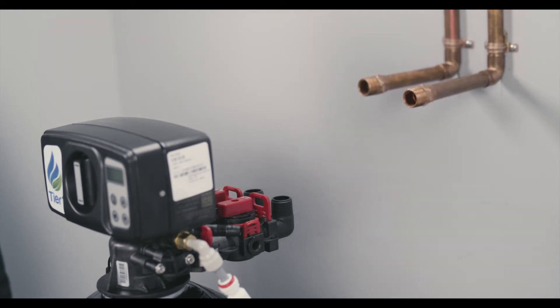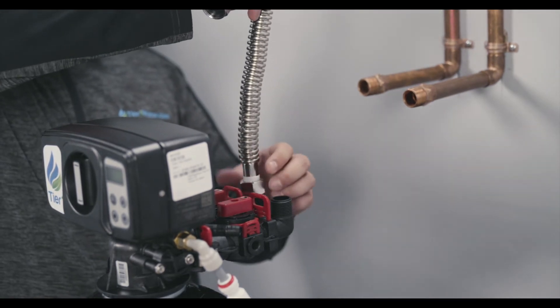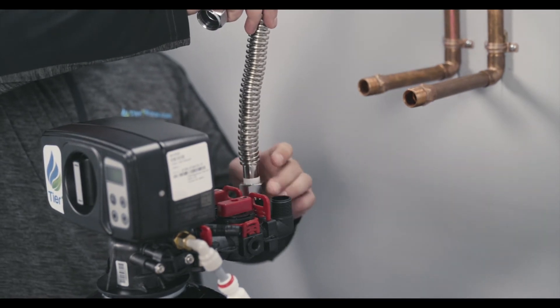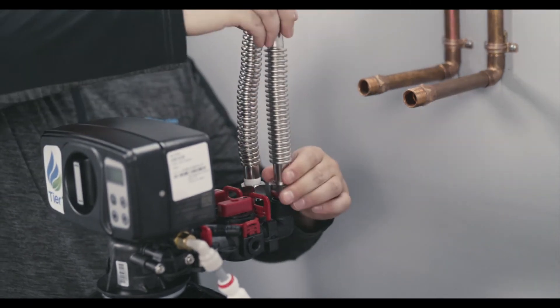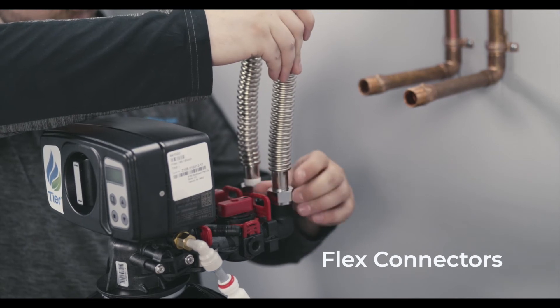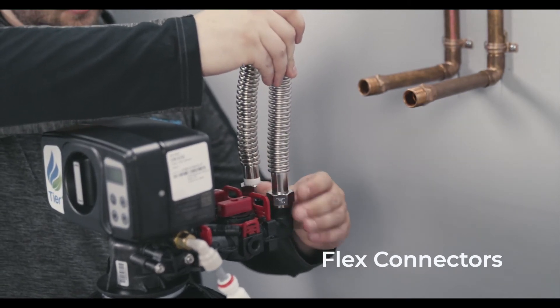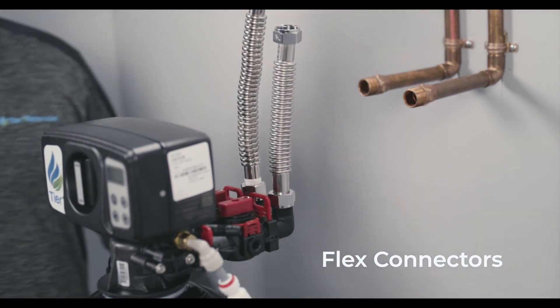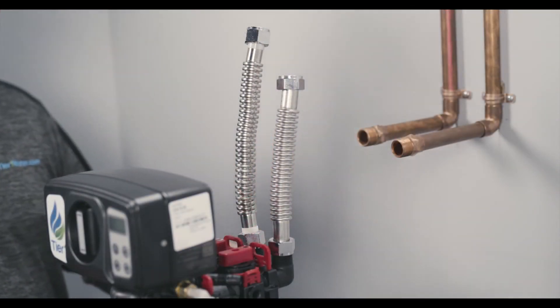Be careful when threading your connections. If you cross-thread the connections while using a metal fitting, you can damage the plastic threading, making it difficult to complete the secure connection. We recommend using flex connectors as shown as they are less likely to have cross-threading issues and also allow for size adjustments for your plumbing system. Once the pipe fittings have been attached to the inlet and outlet, your system is ready to be piped into your home's plumbing.